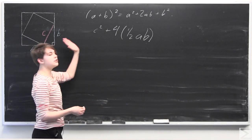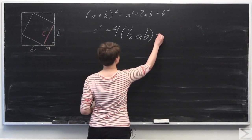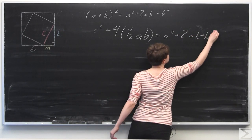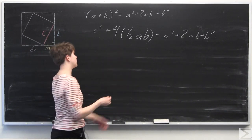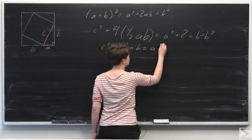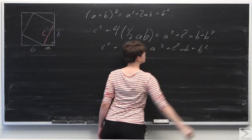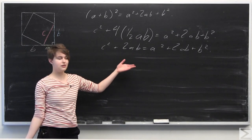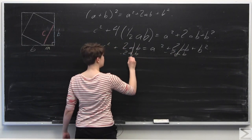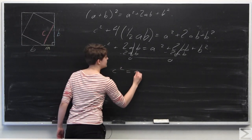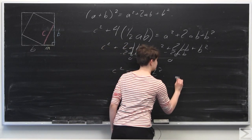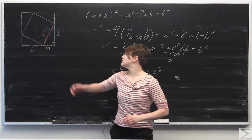Since both expressions describe the same area, we can set them equal: A² + 2AB + B² = C² + 4 × (½AB). Distributing the four, we get C² + 2AB = A² + 2AB + B². We have a common term of 2AB on both sides, so subtracting 2AB from both sides it cancels out, and we're left with C² = A² + B², which is the Pythagorean theorem. That's our first geometric proof using this diagram.